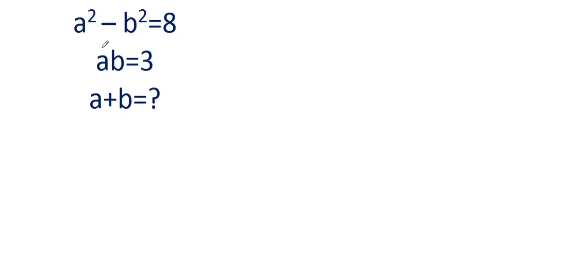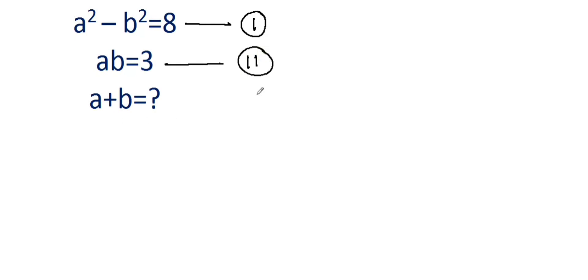Hey guys, here we have given a² - b² = 8, and ab = 3, and we have to find out the value of a + b. So let's see. We'll call this equation number 1 and this one equation number 2. Now taking square on both sides of equation number 1...